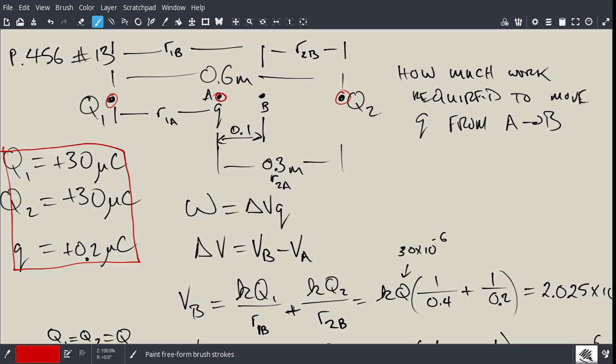We're going to move the small charge in the middle of these two charges. By the way, the distance between these two charges is 0.6 meters. So we're moving the small charge from point A to point B. The question is: how much work would be required to move q, small q, from A to B?